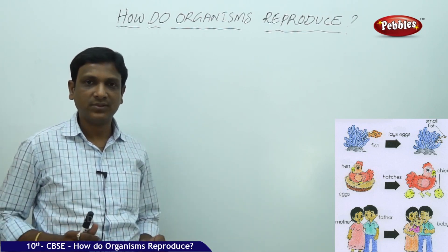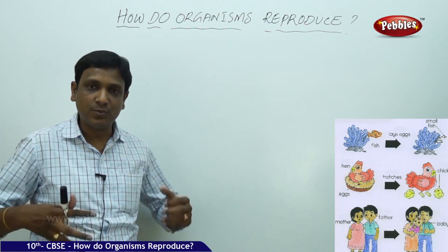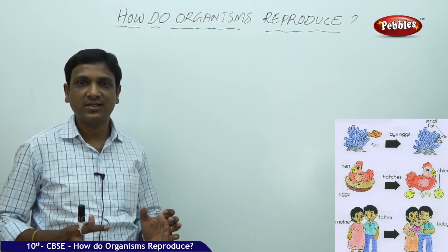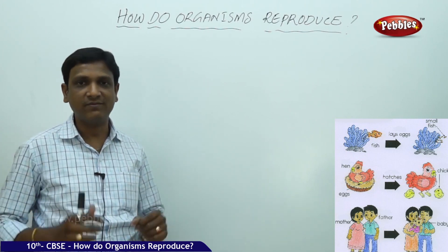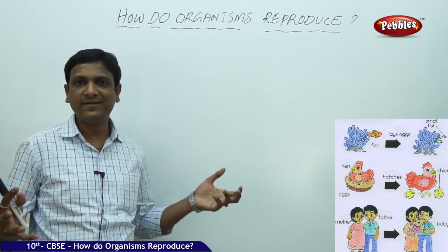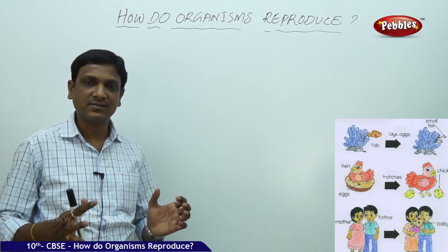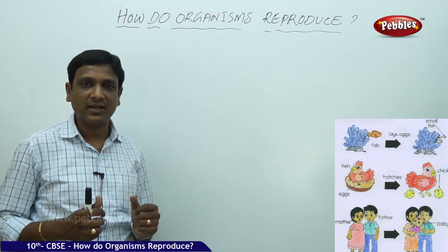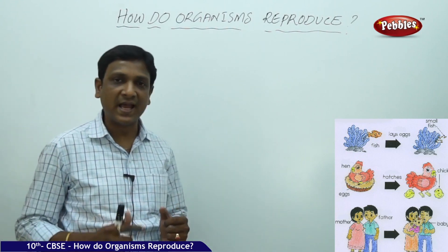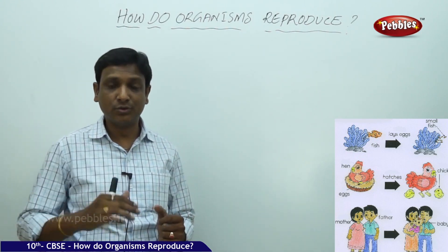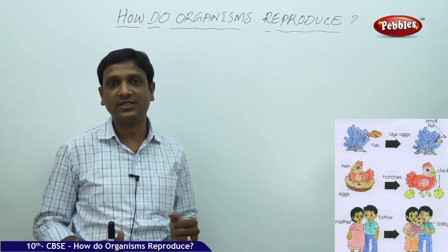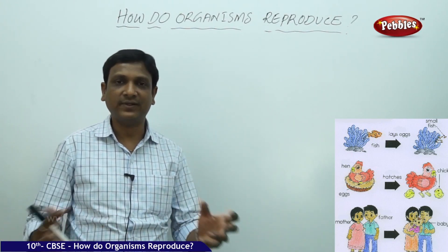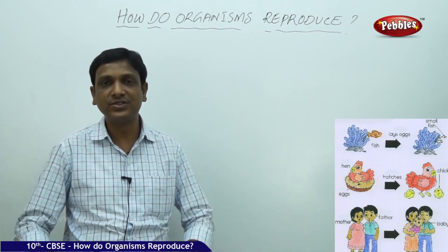For an organism to stay alive, it has to carry out so many activities — it needs to acquire food, oxygen, and all the basic necessary things, carrying out so many reactions just to live. Every organism does this: it acquires food, gets oxygen, lives, and reproduces — producing another organism of its own kind. To reproduce a new organism requires a lot of energy and materials, yet the organism makes the effort to produce a young one of its own kind.